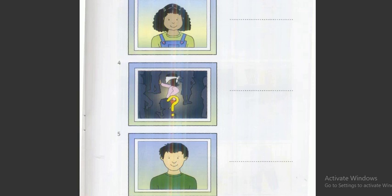Five. Who's this? That's my big brother. His name's Ben. Can you spell that? Yes. B-E-N. I like that name. Me too.